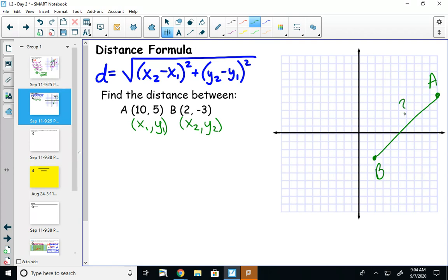We're just going to take these values and plug them in. So d, which stands for distance, will equal the square root of... x2 is 2, x1 is 10, y2 is -3. Don't forget that negative. y1 is 5. And now we'll just simplify this equation.